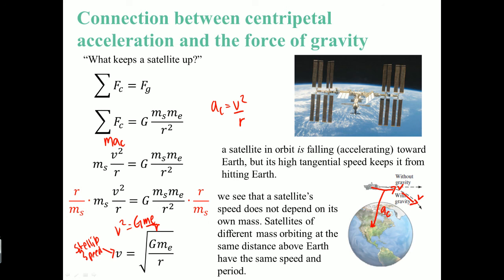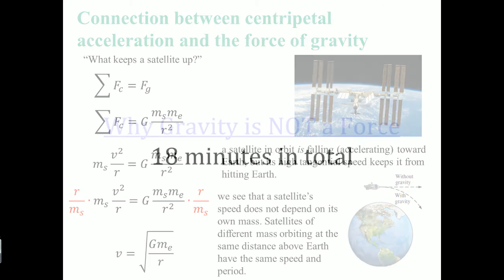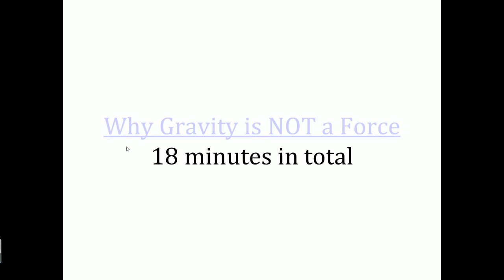We see that the satellite speed, this is the satellite speed here, actually does not depend on the mass of the satellite. It does depend on the mass of Earth though. But the mass of Earth stays constant. So the satellites of different masses will orbit at the same distance above Earth, will have the same speed and have the same period. Why? It only depends on g and r. So any satellite with the same r will have the same speed, does not depend on its mass.